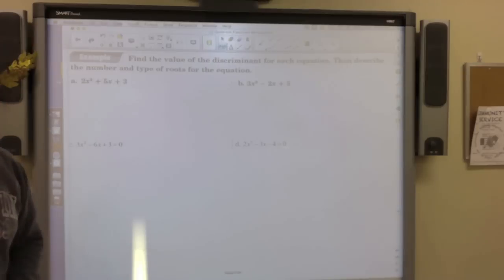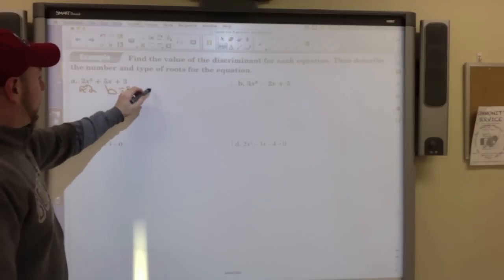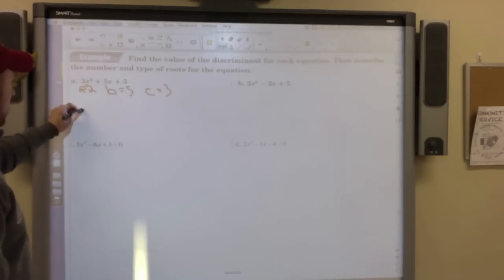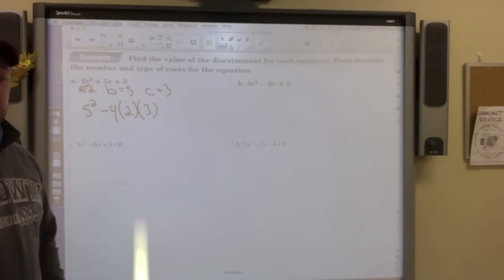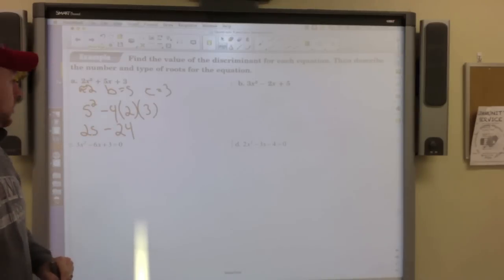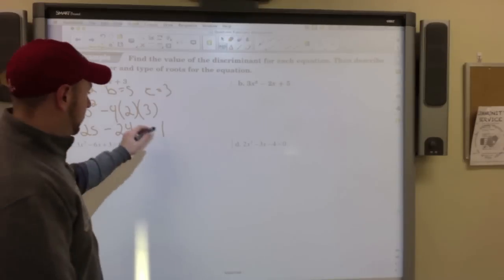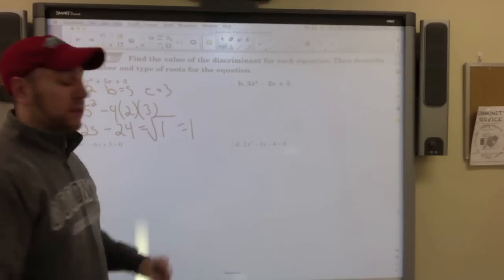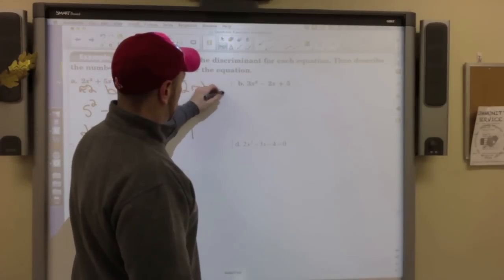So let me give you a couple of examples here. Example one: 2x squared plus 5x plus 3. a is 2, b is 5, c is 3. So all I do, 5 squared minus 4 times 2 times 3. 25 minus 24, which is 1. Can I find the square root of 1? Yes. The square root of 1 is 1. That's a perfect square. So I know that there are 2 rational roots.